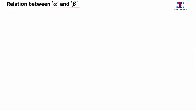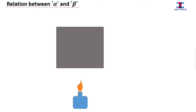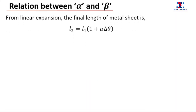Now let's derive the relation between alpha and beta. For this, let us consider a square metal sheet of initial length l1 and area a1. When this square metal sheet is heated for some time it expands. After expansion, let the final length be l2 and area a2, and during this process the rise in temperature is delta theta. From the linear expansion, the final length can be written as l2 = l1 times (1 + alpha·delta theta).